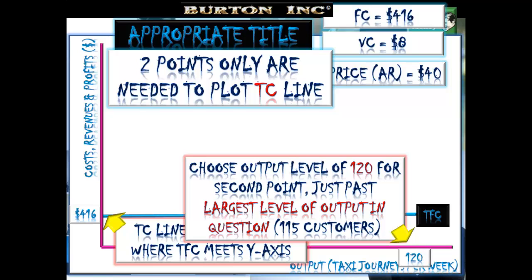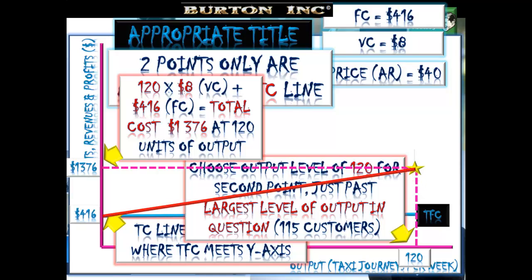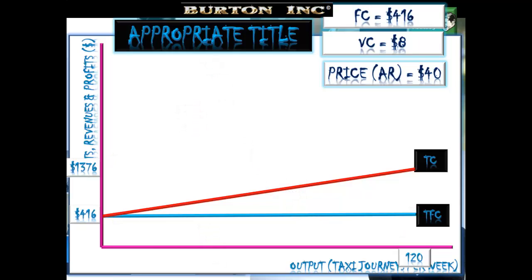At 120 taxi journeys per week, the variable cost is $8. $8 times 120 plus the $416 fixed costs gives us our total cost. That total cost turns out to be $1,376 at 120 taxi journeys. Plot the point at 1376, 120 — dot across, dot down — draw the line and label it 'Total Costs'. Those are our two cost curves.